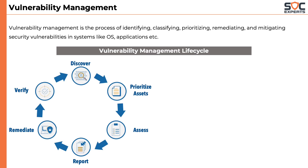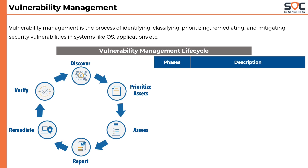The vulnerability management lifecycle looks like this: it starts with discovery, then prioritizing assets, vulnerability assessment, reporting the vulnerabilities, remediating them, and finally verifying. In the discovery phase, all assets in the network are identified — making a list of all servers, routers, switches, access points, printers, etc. This is not done manually; most companies use the host discovery scan feature in vulnerability scanners.